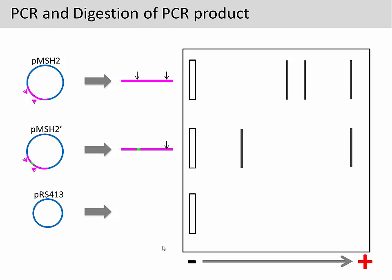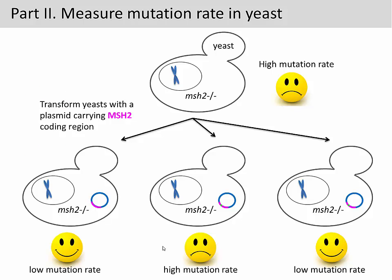This is how you distinguish the three plasmid DNAs from each other in the first part of the project. In the second part, we will introduce the plasmid DNAs into yeast and measure mutation rate.